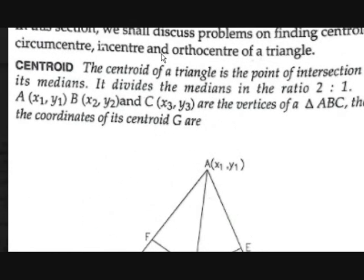The meeting point of such perpendicular bisectors is called the circumcenter. Incenter is nothing but the meeting point of the angular bisector. As we discussed in a previous video, angular bisector means it divides an angle into two equal parts, and the intersecting point of such angular bisectors is called the incenter.